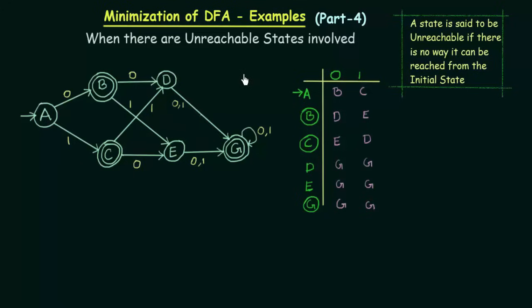I have now removed the unreachable state F and made the transition table without it. Here A is my initial state, and we have three final states: B, C, and G. This is the transition table.